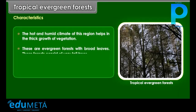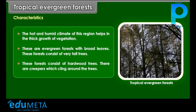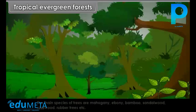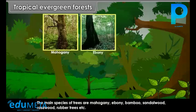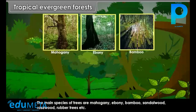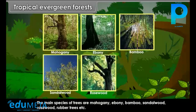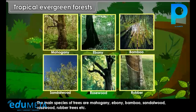Characteristics: The hot and humid climate of this region helps in the thick growth of vegetation. These are evergreen forests with broad leaves and very tall trees consisting of hardwood. There are creepers which cling around the trees. The main species of trees are Mahogany, Ebony, Bamboo, Sandalwood, Rosewood, and Rubber trees.